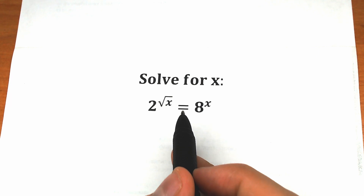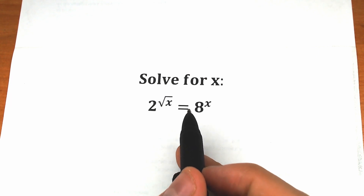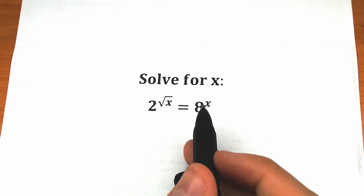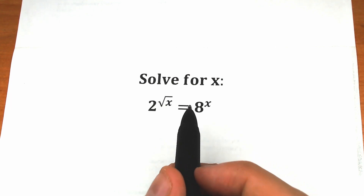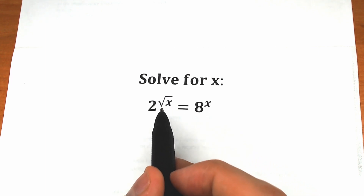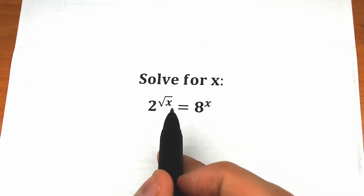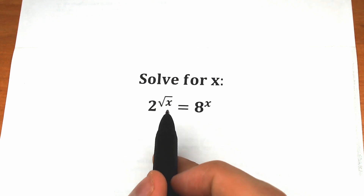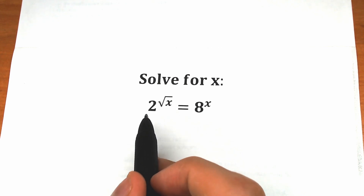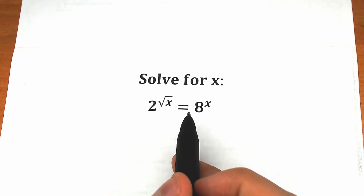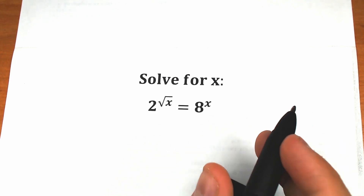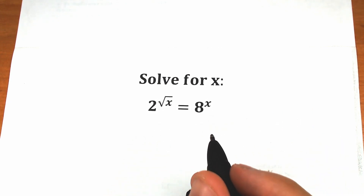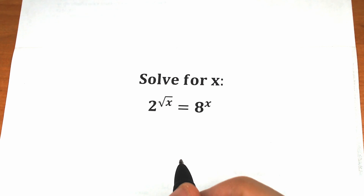2 to the power square root of x equals 8 to the power x. A lot of students might be saying: we have square root, we have x, we have 2, we have 8 — different bases, different things on the left side, different on the right side. So how is it possible? How can I solve this challenge?